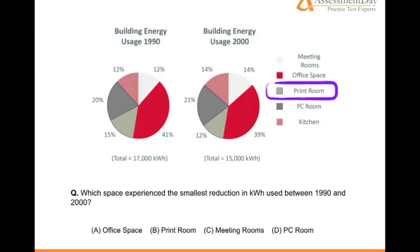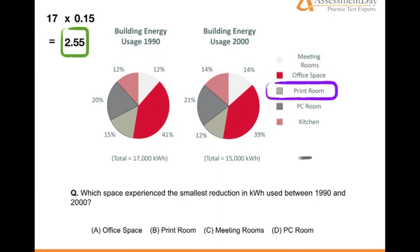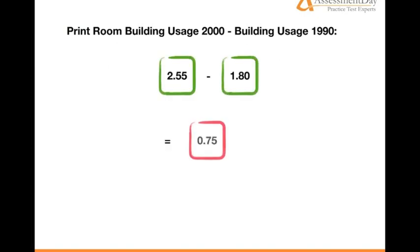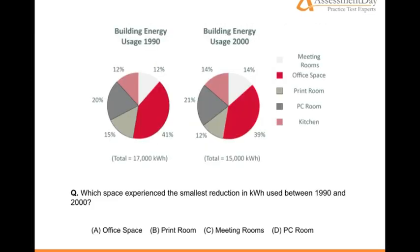Print room. We do the exact same calculation. So 17 multiplied by 0.15 equals 2.55. 15 multiplied by 0.12 equals 1.80. So therefore, we take 2.55 minus 1.80, which equals 0.75.